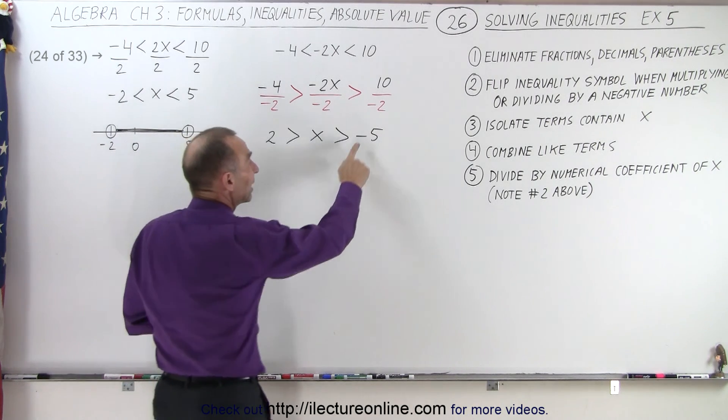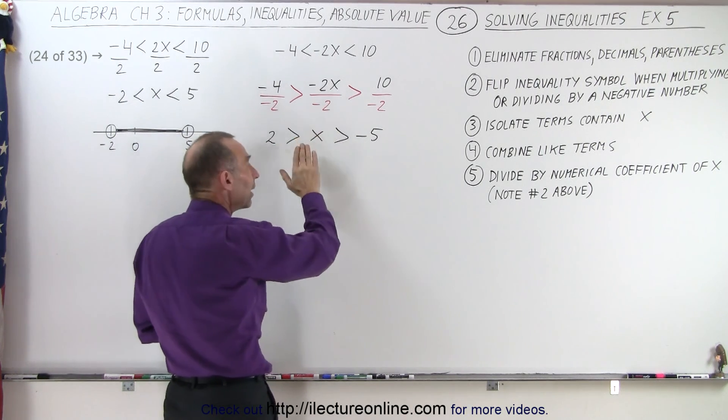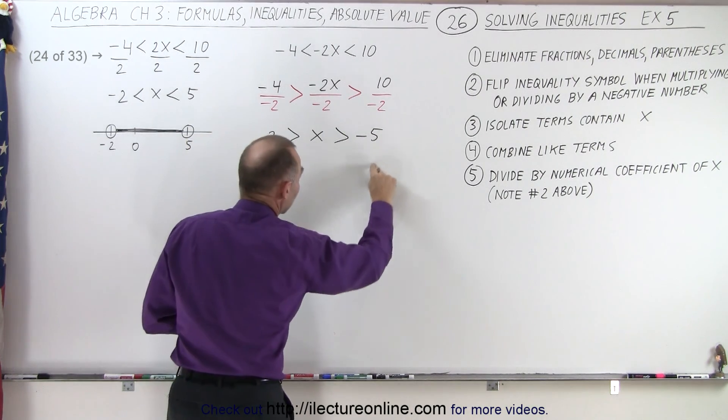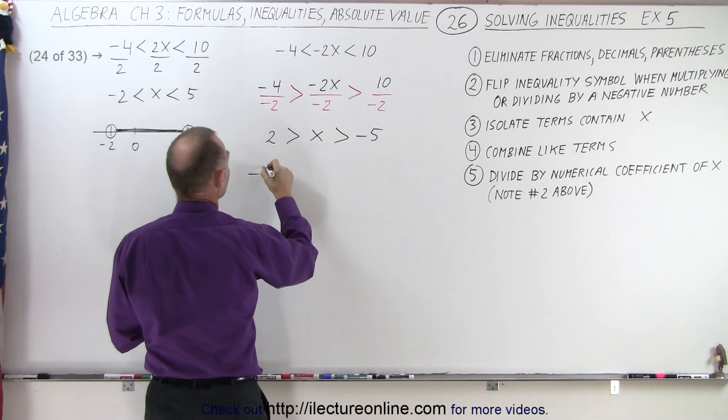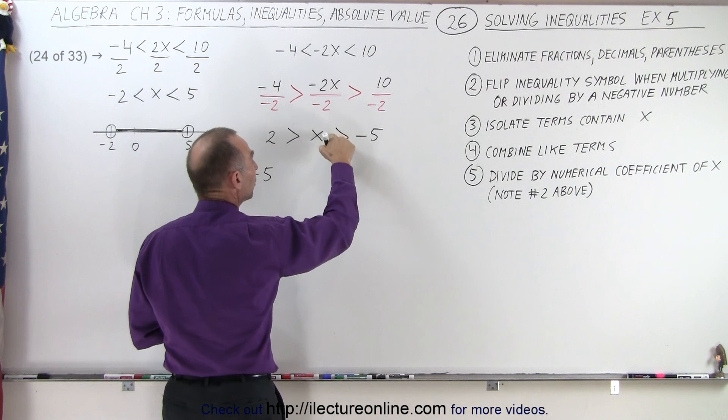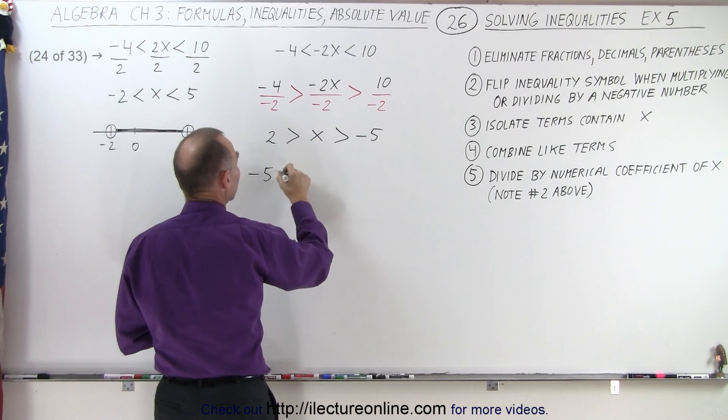Also know that it's negative 5 that's smaller than an x, so when we flip this around, we want to make sure that everything is in the same order. So I'm going to put the negative 5 over here. I'm going to have the inequality symbol with the point to the negative 5 in the open space to the x, so it's going to be like this.